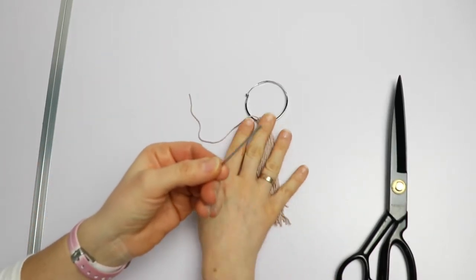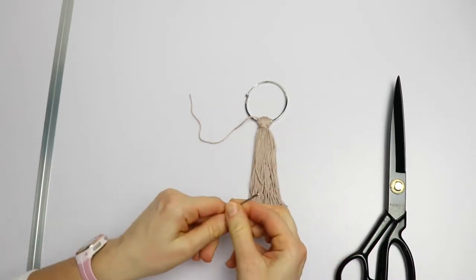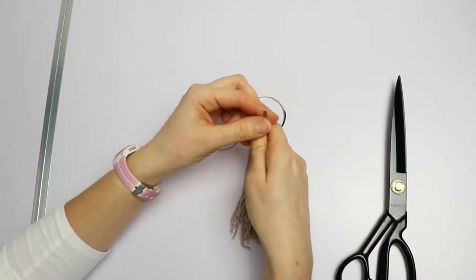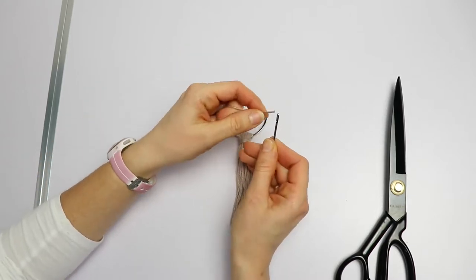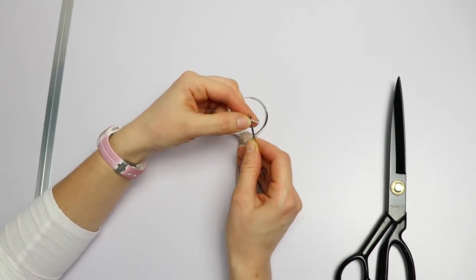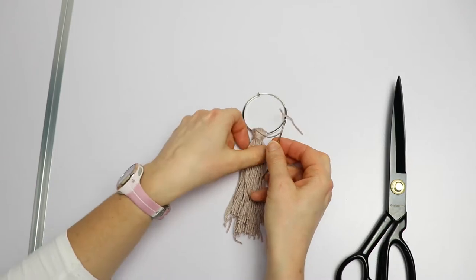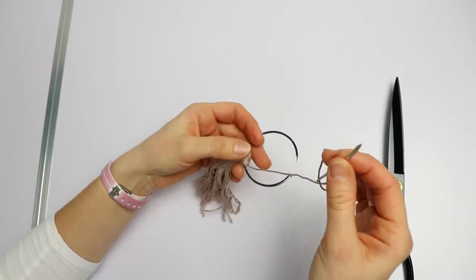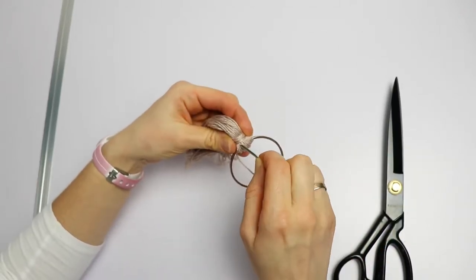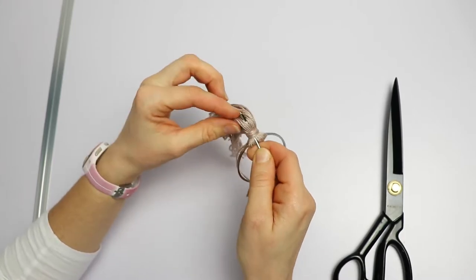To make the tassel neat and tidy, grab your big needle. Thread it with a short piece of yarn and stab it in the middle of the tassel.